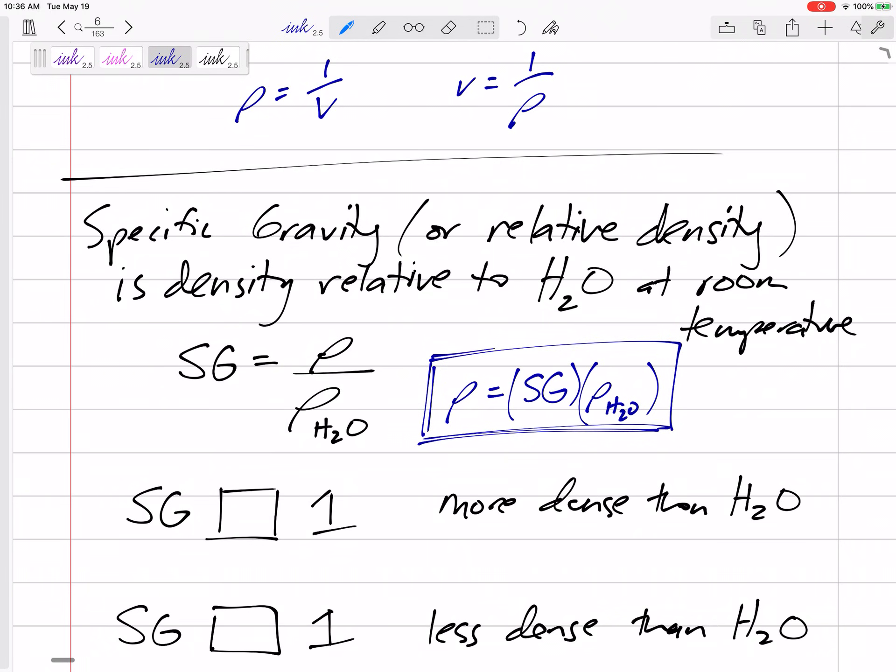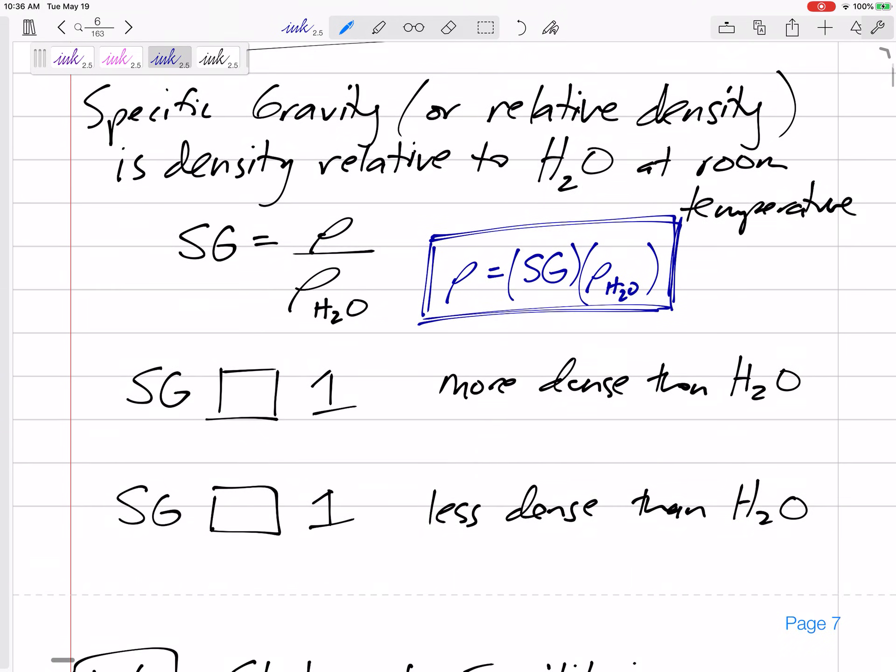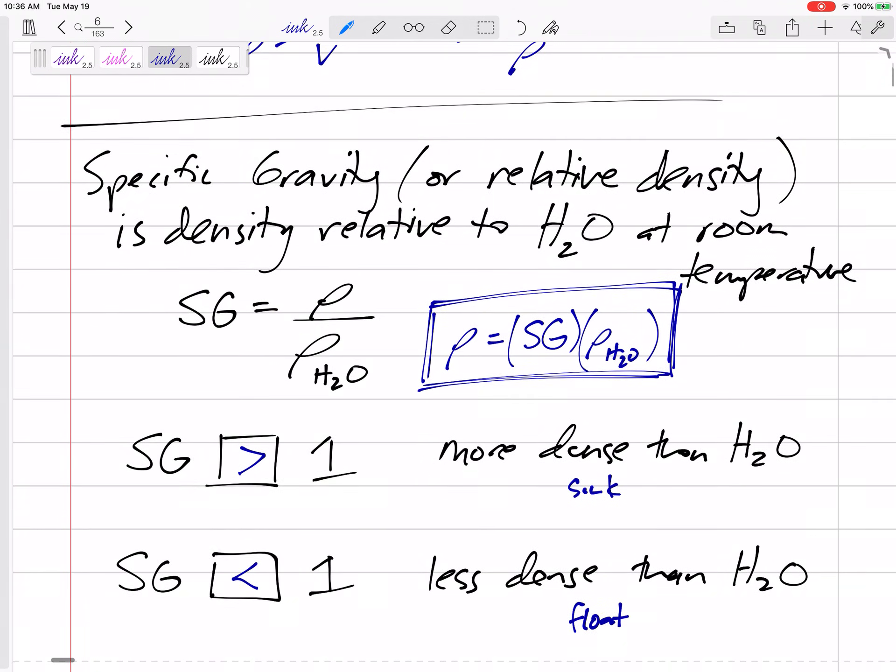The density of something is specific gravity times the density of water. So specific gravities that are greater than one are more dense. Specific gravities that are less than one are less dense. These would sink, these would float. Density is specific gravity times the density of water.